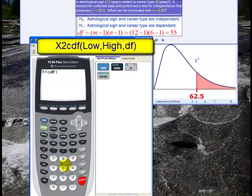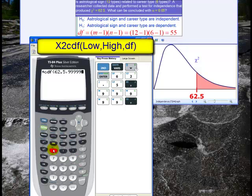The lower bound is 62.5, the upper bound is infinity and I'll use 99999 to trick the calculator, and the degrees of freedom is 55. I end the parentheses and hit enter. And it gives us that the p-value is about equal to 0.23.